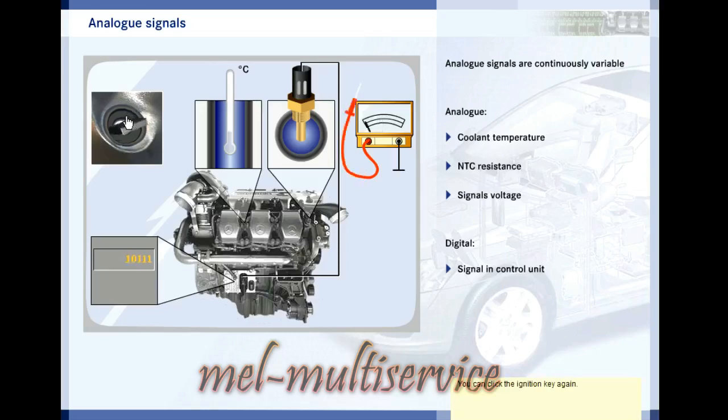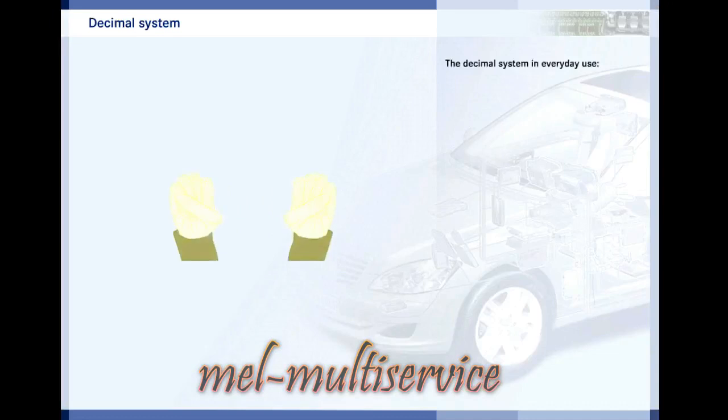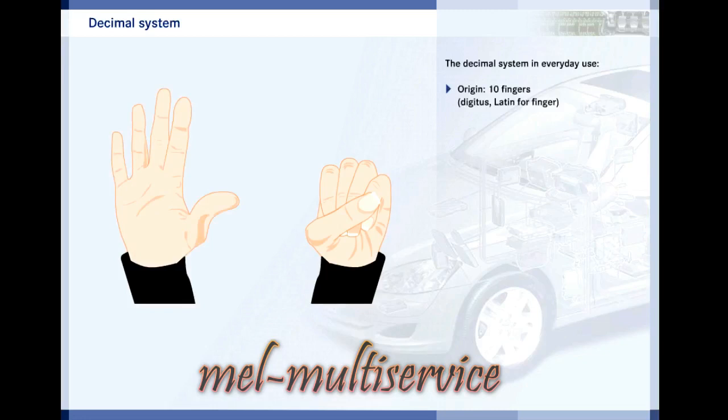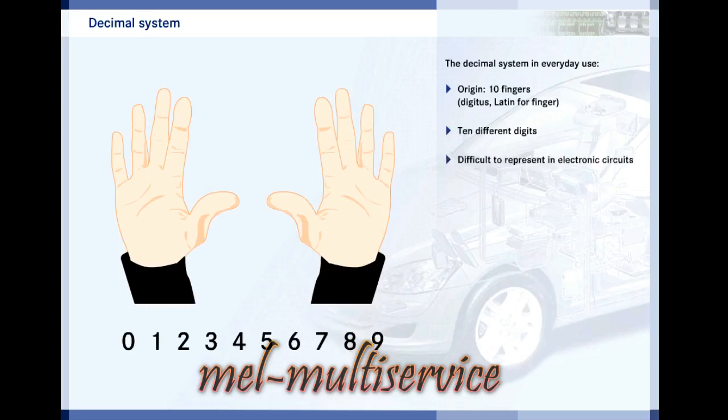These days, computations are made digitally, which means they are based on number systems. For everyday purposes, we use the base 10 or decimal system. This is where the word digital comes from, since we count using our 10 fingers and the Latin word for finger is digitus. Ten different numbers are used in the decimal system, from 0, 1, 2 to 9. However, 10 different numbers are difficult to represent in electronic circuits. Therefore, a different number system is used for calculations in electronic systems.